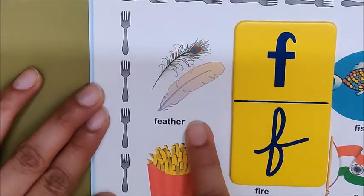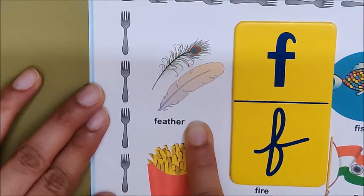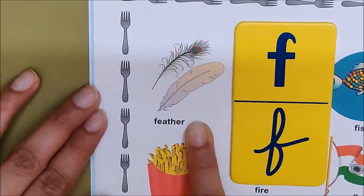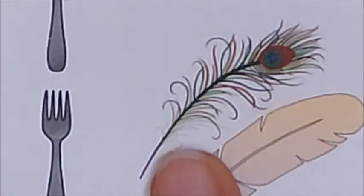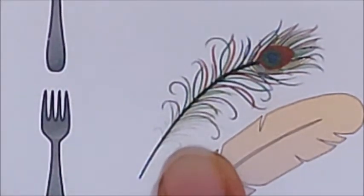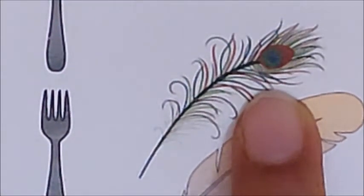F for feather. Children, all the birds have feathers. Feather helps the bird to fly. And children, can you tell me which bird has got a feather like this? Peacock. Peacock has feathers like this.